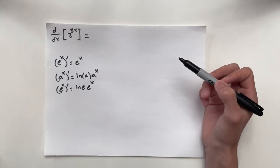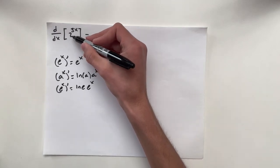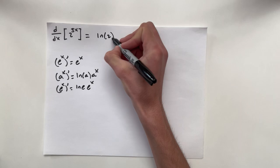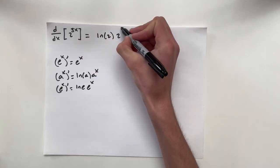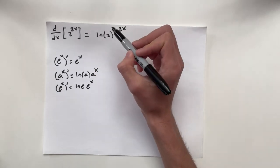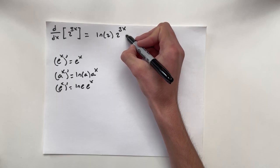So using this rule, we're able to easily solve this function. Our base is 2. So the natural log of 2 times 2 to the 3x. But you have to remember here, we also have to multiply by the chain. So the derivative of 3x is simply 3.